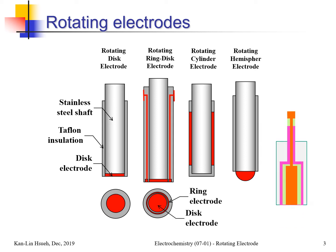In the ring-disk electrode, the stainless steel conducts current through the center to the disk electrode — there is one contact to control the disk potential and allow current to flow. On the outside ring, there is insulation between the disk and ring, and a separate second contact to control the ring potential independently and let current flow through the ring.